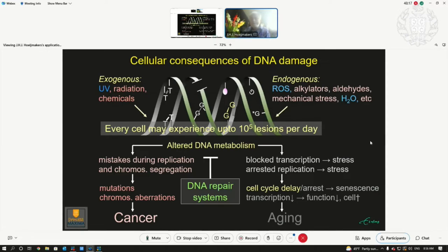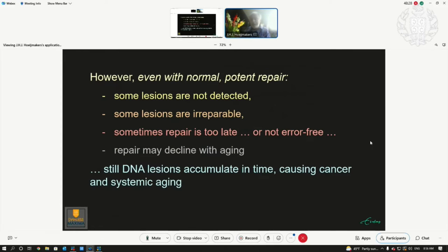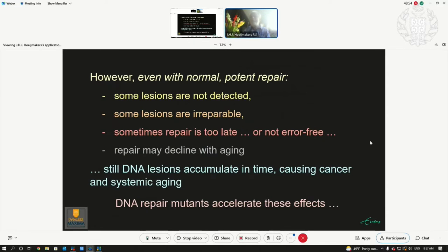Fortunately, there are repair systems constantly fighting back, detecting damage and repairing it before it leads to these consequences. But even with normal repair, some lesions are not detected, or not repairable, or repair arrives too late, or it makes mistakes. With aging, repair may decline. Despite potent repair, DNA lesions still accumulate over time, causing cancer and systemic aging. And of course, all of this is accelerated when you have a repair defect.